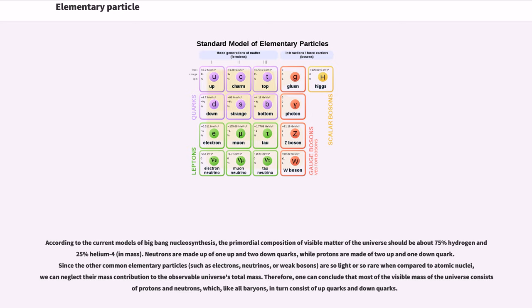we can neglect their mass contribution to the observable universe's total mass. Therefore, one can conclude that most of the visible mass of the universe consists of protons and neutrons, which, like all baryons, in turn consist of up quarks and down quarks.